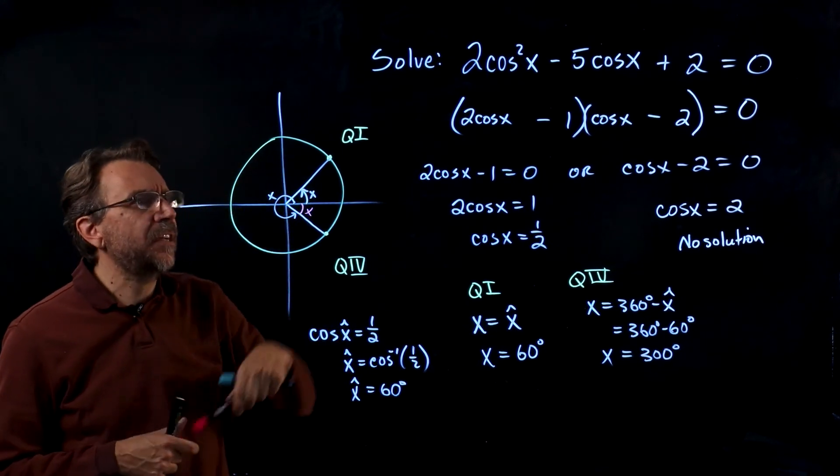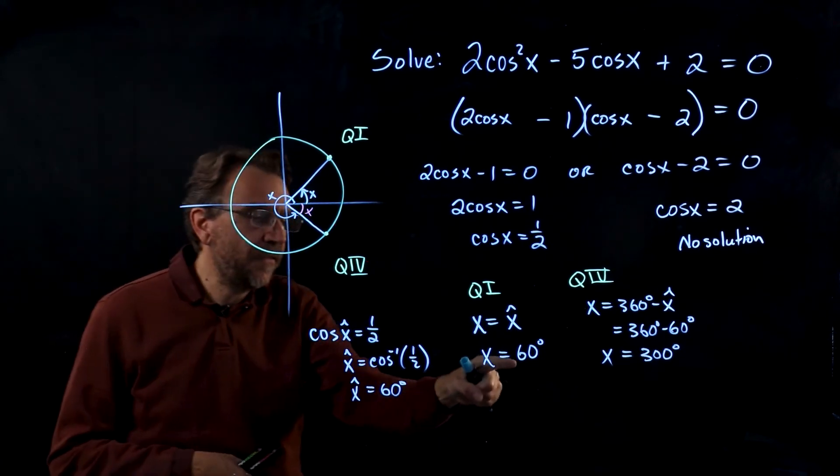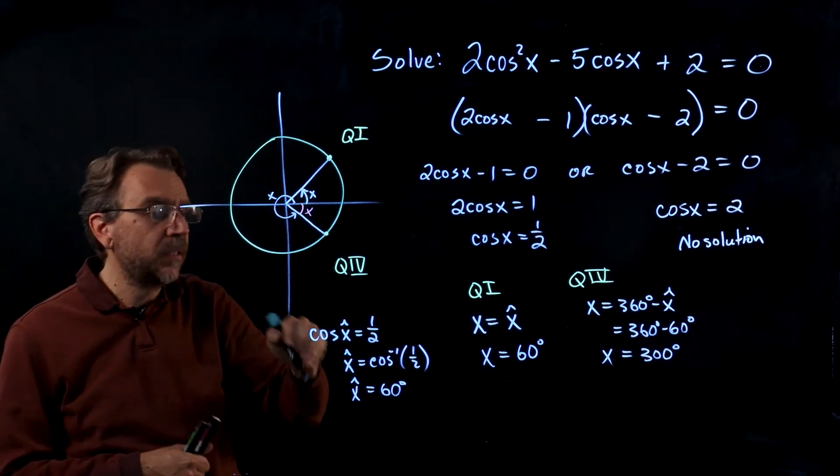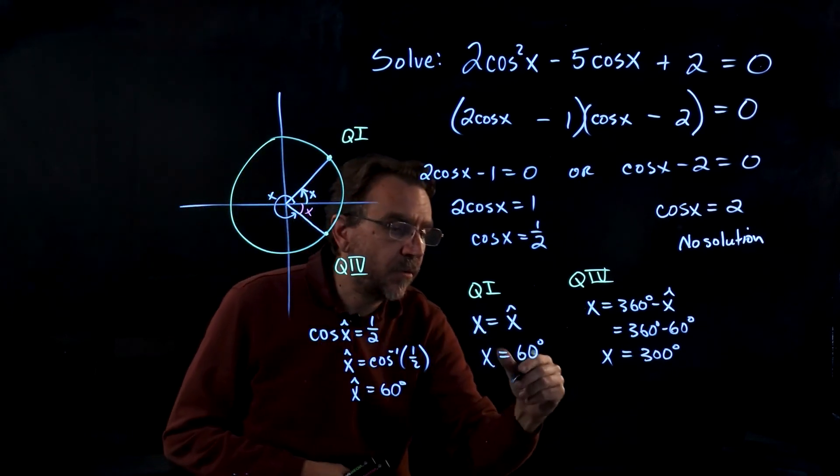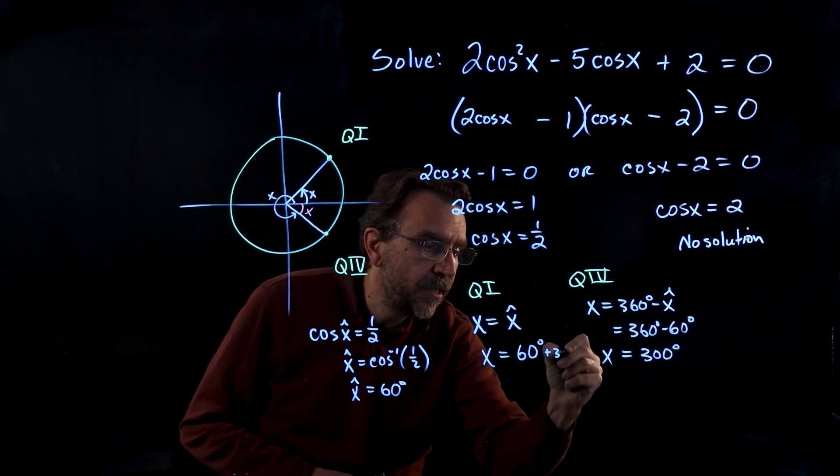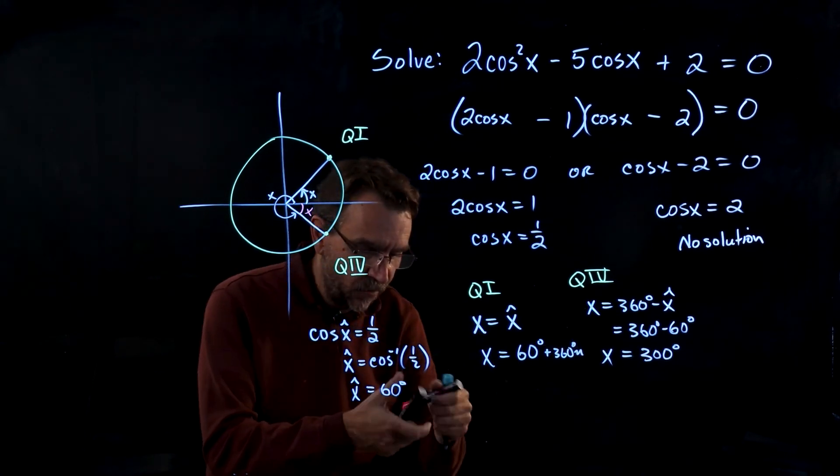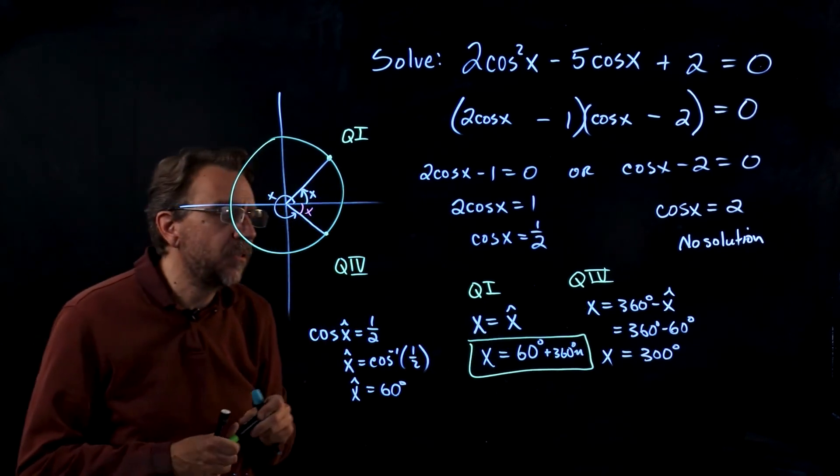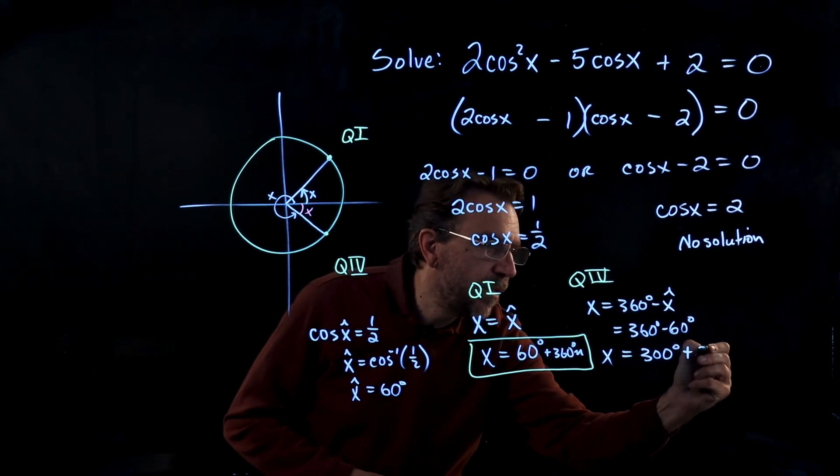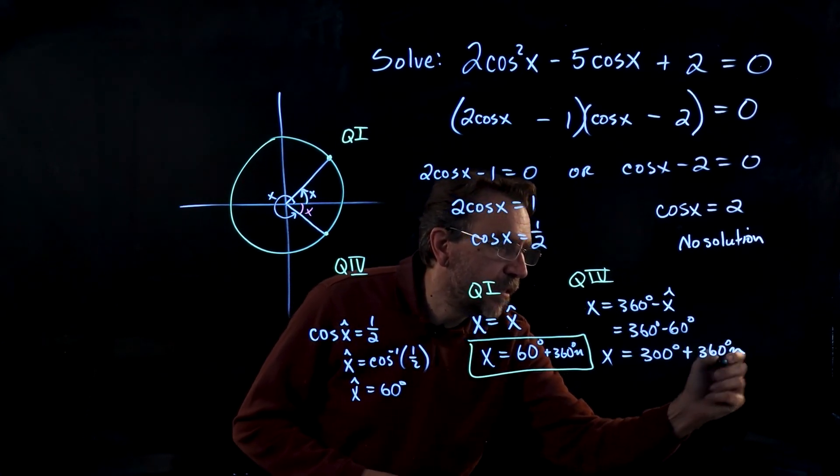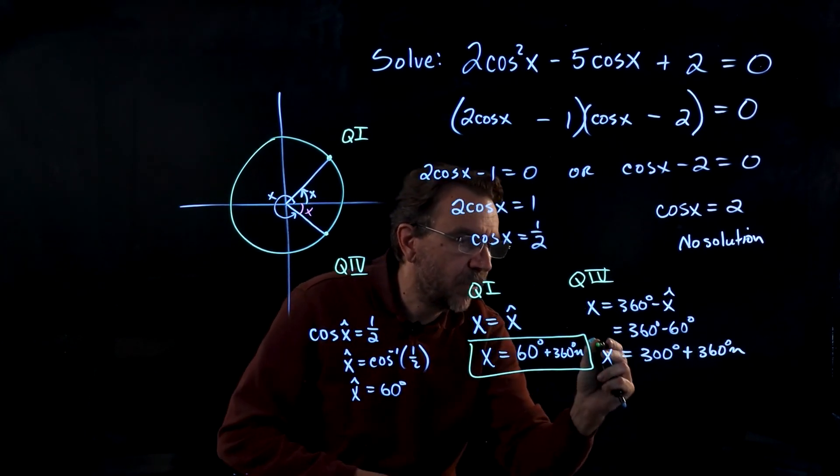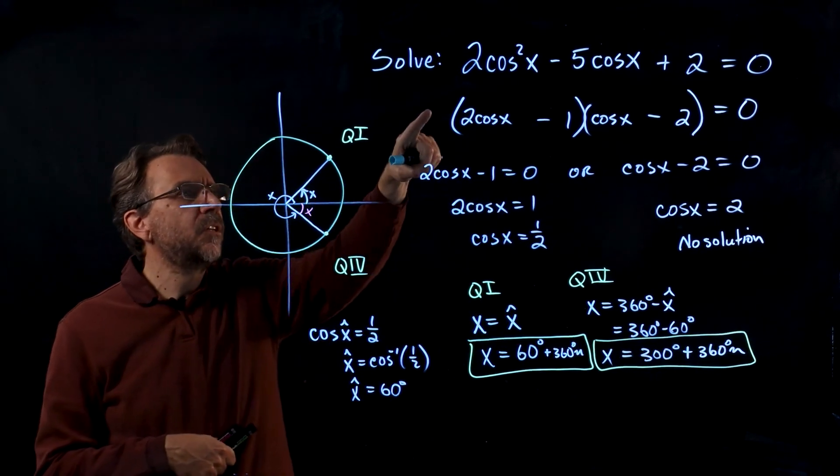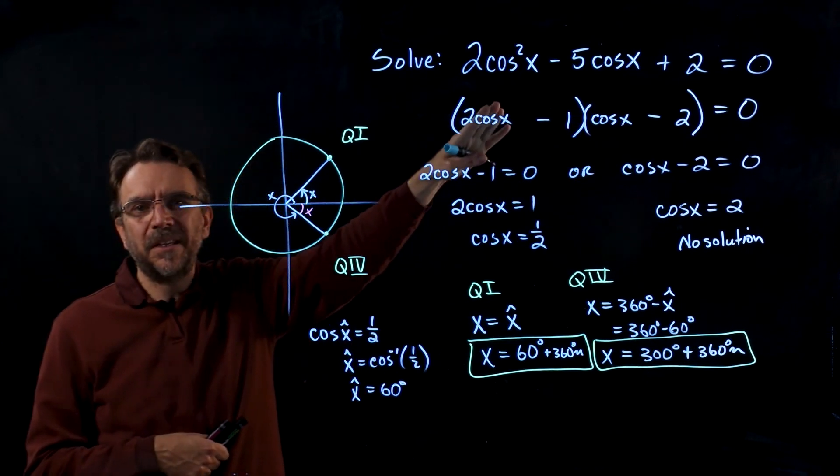So you think you're done there, but actually I wanted all the solutions. In fact, if I take 60 degrees and add 360 degrees to that, I'll get a coterminal angle, and that'll also solve the equation. So what we're going to do is add 360 n to that, where n is an integer. So there's infinitely many solutions, coterminal and quadrant 1. And we'll do the same thing here, 360 degrees n coterminal and quadrant 4. So infinitely many solutions to this trigonometric equation that happens to be quadratic.